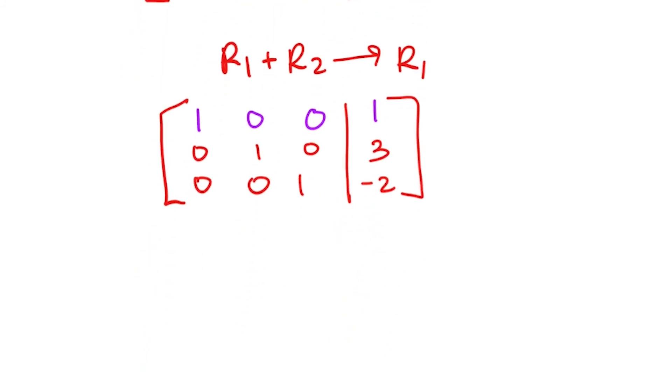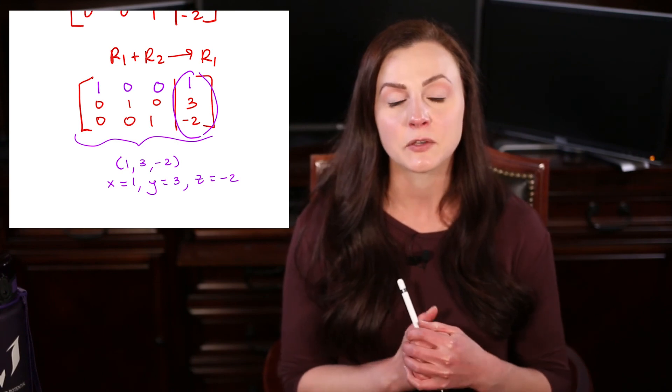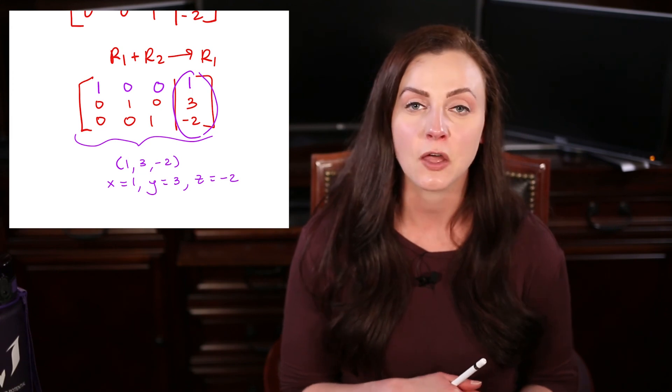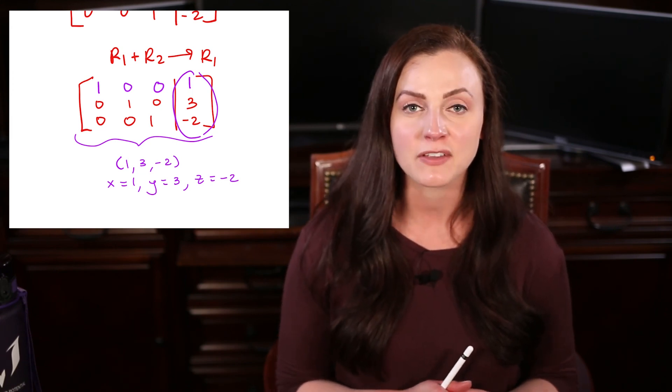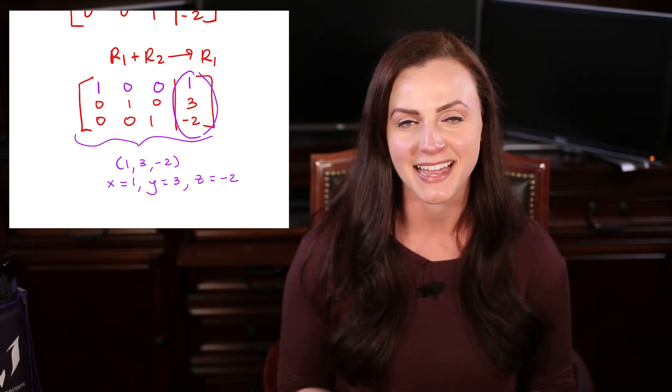And now we have our matrix in reduced row echelon form, which means our solution is on the right-hand side. This is saying x equals 1, y equals 3, z equals -2. We can write our answer as an ordered triple, or we can just write it out x equals 1, y equals 3, z equals -2. And that is how you use Gauss-Jordan elimination to put a system in reduced row echelon form to solve for x, y, and z. If you have any questions you would like me to do or any topics, please comment them below. Thank you for watching and please like and subscribe.